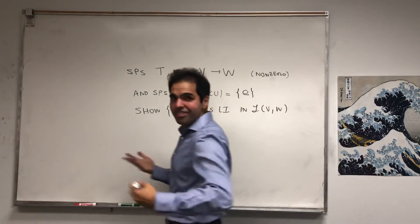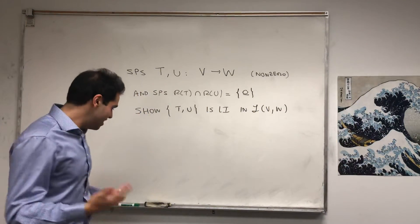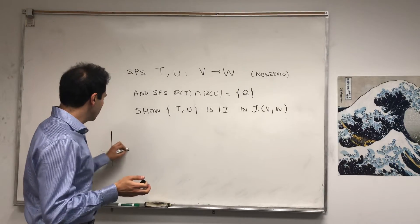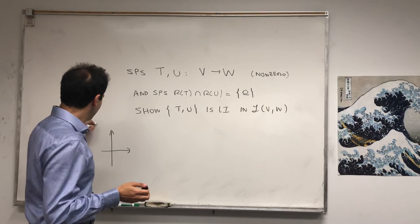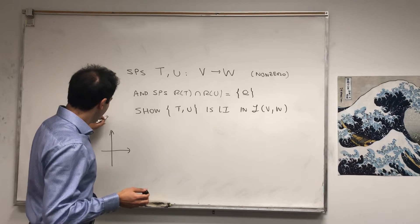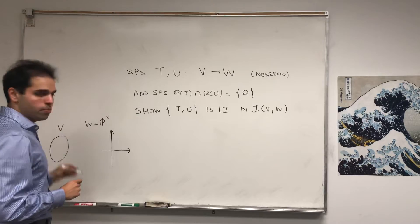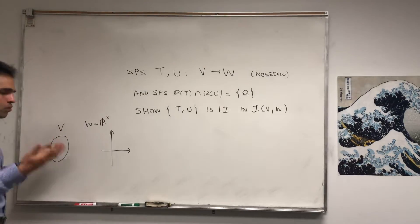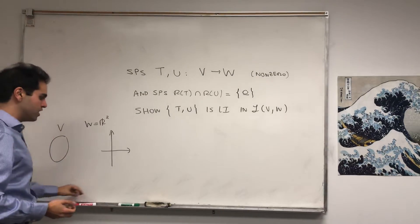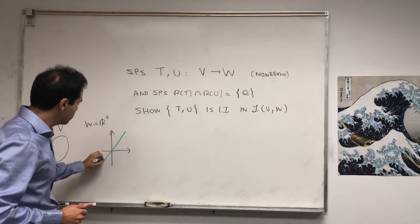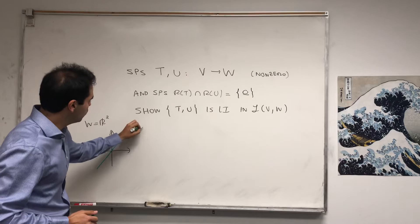This is a beautiful result. And this is a really neat statement. In other words, let's say we're in R2, so W is R2, and V is any vector space. Suppose T takes all of V and maps it, let's say, to the line y equals x, so this is R of T.